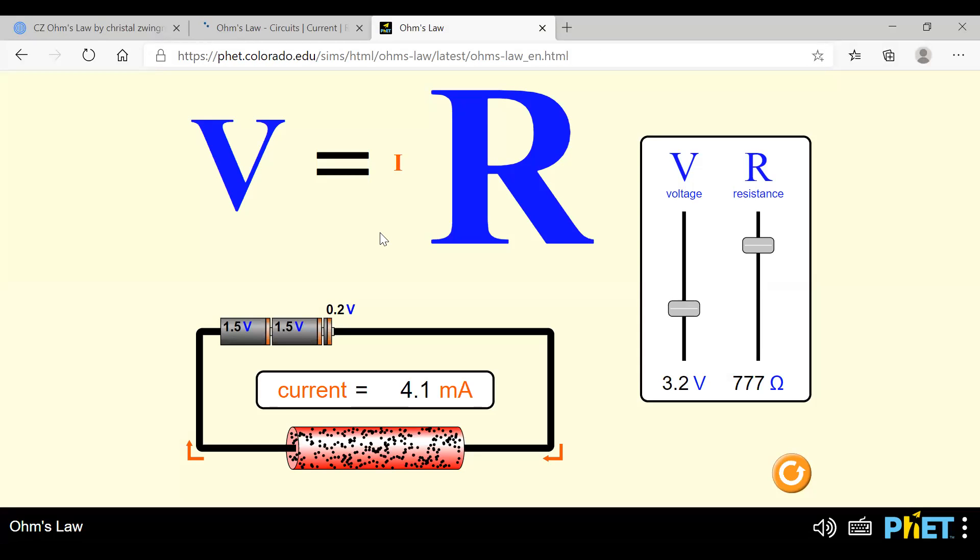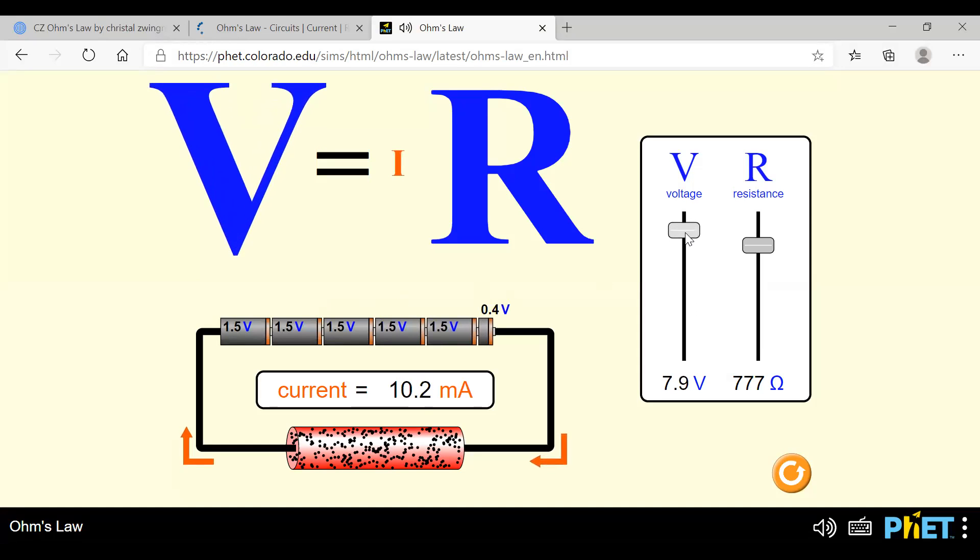See, in this, you can see if I keep the resistance constant and increase the potential difference, you can see the current is also increasing. If I keep on decreasing the voltage, the value of the current, you can see the value of current is decreasing here.